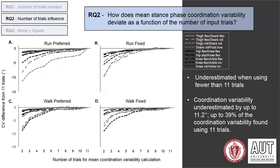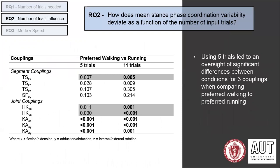Moving on to the second research question, we wanted to assess the real-world effects of using too few trials. Coordination variability was compared to the outputs for 11 trials, as that was determined to produce a stable mean. Using too few trials was found to underestimate coordination variability for each coupling in each condition. If two trials were used compared to 11, up to 11 degrees of coordination variability difference was found. Furthermore, when five trials — accepted as the lowest number used in previous gait coordination variability research — were compared to 11, three coupling differences between preferred walking and preferred running would have been overlooked, highlighting the importance of using a minimum of 11 trials.